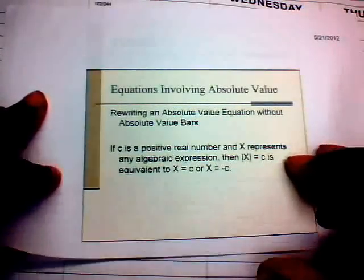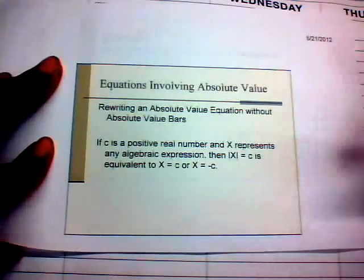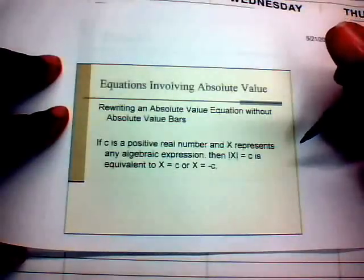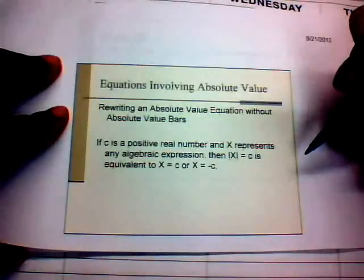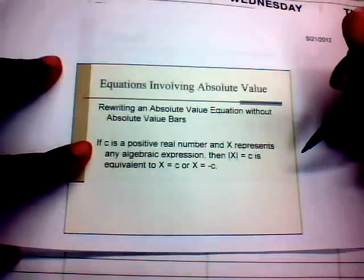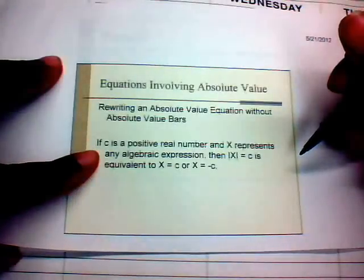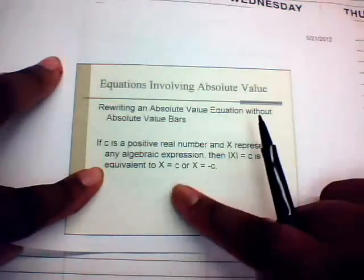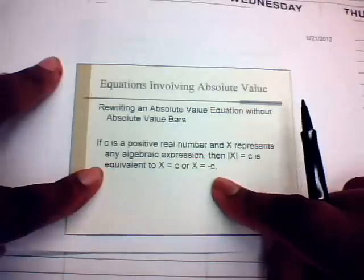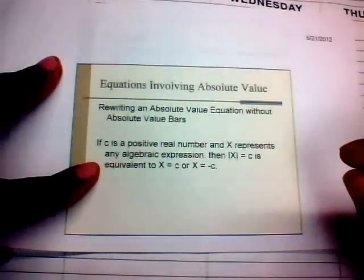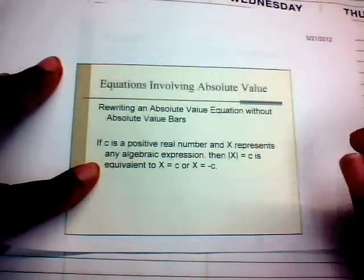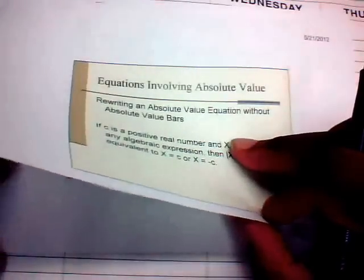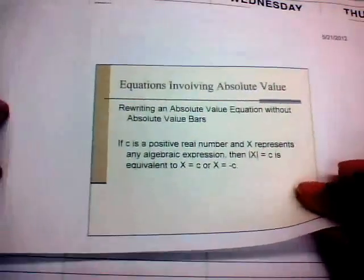Next we'll look at absolute value equations. The procedure: if c is a positive real number, then |x| = c is equivalent to x = c or x = −c.